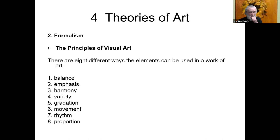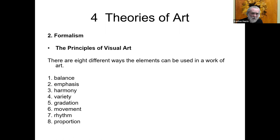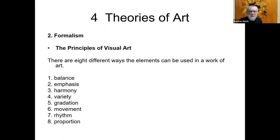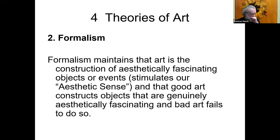It's been noted that there are strong triangular arrangements in Leonardo da Vinci's The Last Supper, and similar triangular arrangements in Picasso's Guernica — very different in subject matter and what they represent, but trading on similar formal principles and formal elements. This is what formalists say we should be looking for in works of art. What recommends certain works of art is that these principles and elements have been arranged in ways that are aesthetically compelling. Formalism maintains that art is the construction of aesthetically fascinating objects and events stimulating our aesthetic sense; good art genuinely stimulates it, and bad art fails to do so.